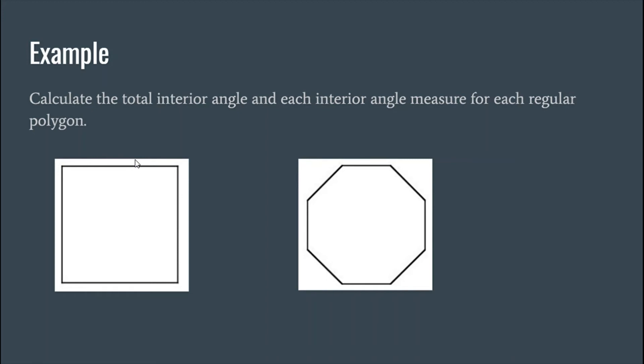So the sum of all these interior angles is 360 degrees. Now to find the measure of each individual angle, we'll take that total angle and divide it by the number of sides it has. So 360 divided by 4 is 90 degrees. So each angle measures 90 degrees.